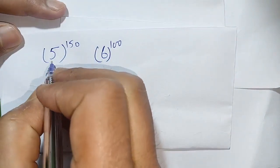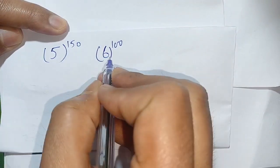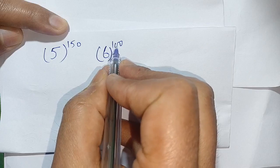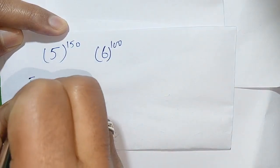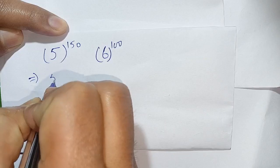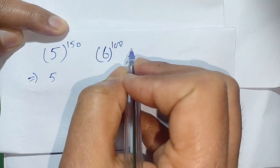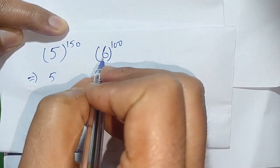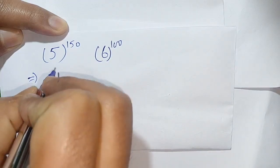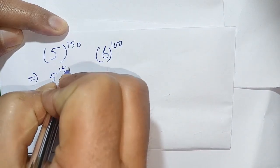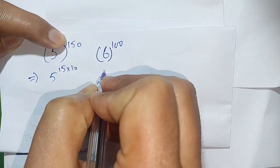Hello everyone. Here are two terms: 5 raised to power 150 and 6 raised to power 100, and we have to find which is greater. We can write 5 raised to power 150 — since 150 is a multiple of 10 — as 5 raised to power 15, times 10, and 6 raised to power 10 times 10.